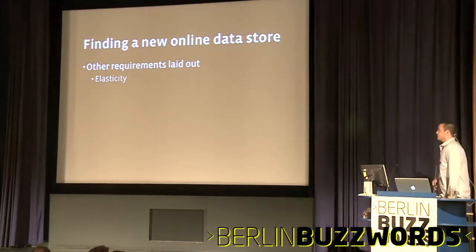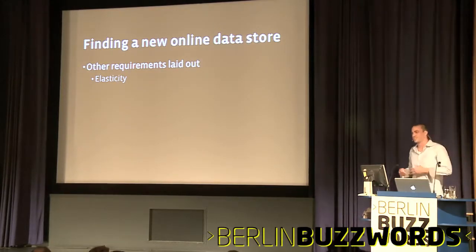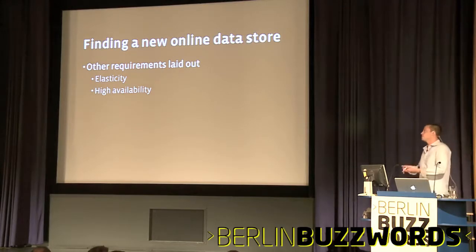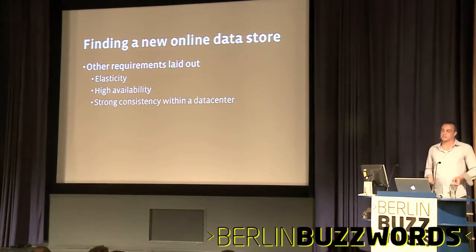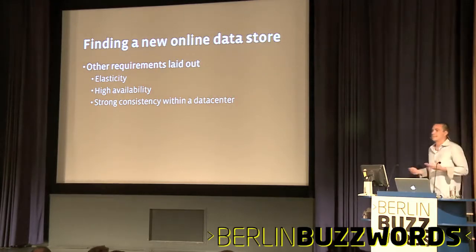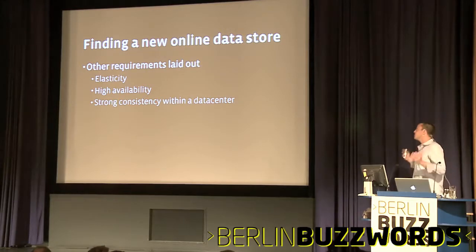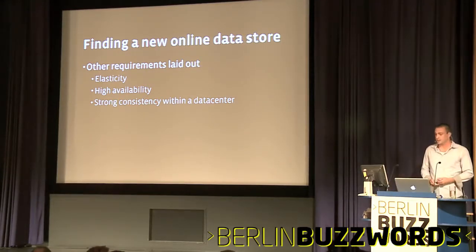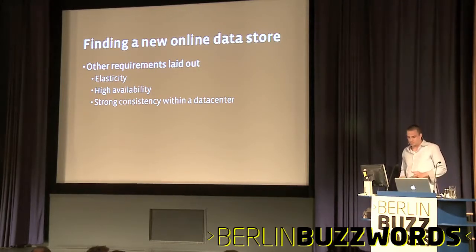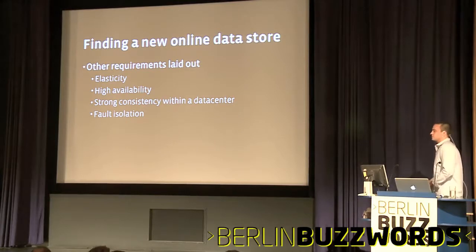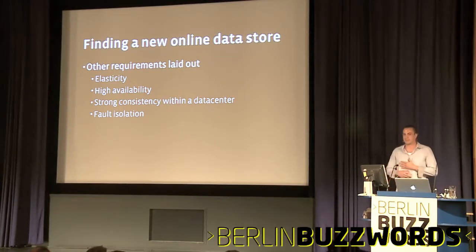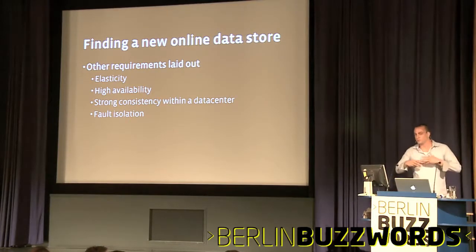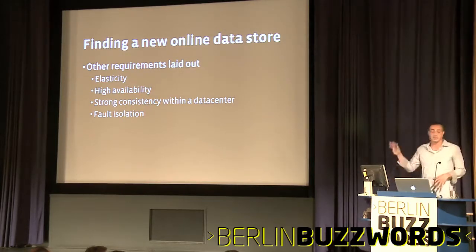So then we laid out some higher-level requirements. We really wanted something that was elastic — something we didn't have to worry about distribution, we could grow it and shrink it automatically. We really wanted high availability; we didn't want to worry about nodes going down. We also wanted strong consistency within a data center. The primary reason for this is caching — Facebook caches a lot, and having eventual consistency with a cache on top of it can be very difficult to reconcile. We also really wanted fault isolation. Disks die constantly — every day many, many disks are dying — and we wanted to make sure that if one disk dies on one node, it doesn't bring down the cluster.